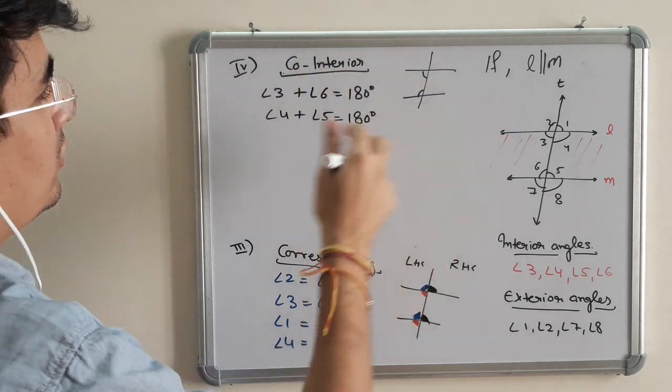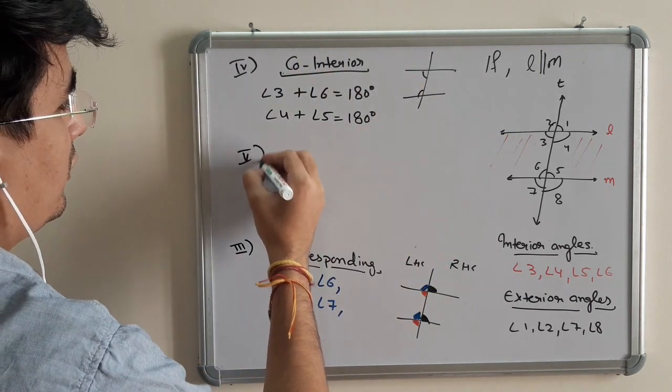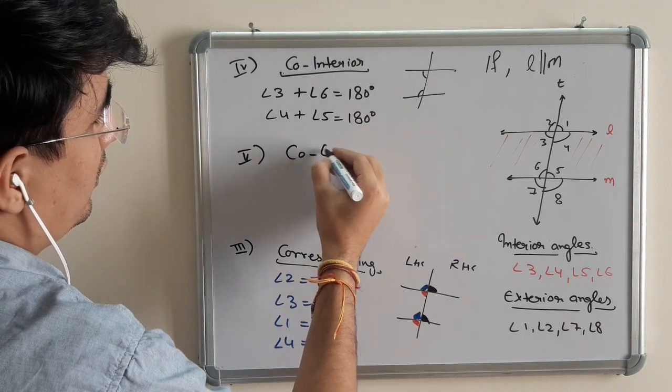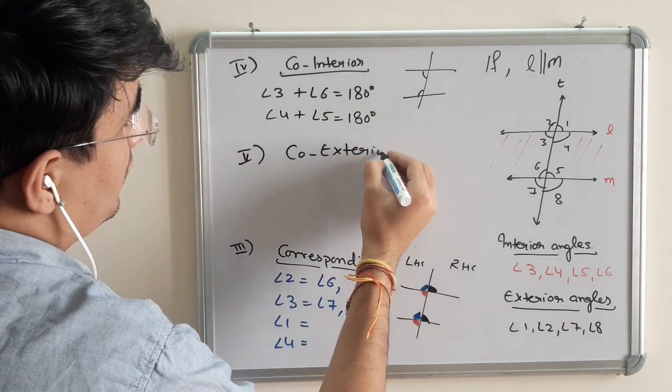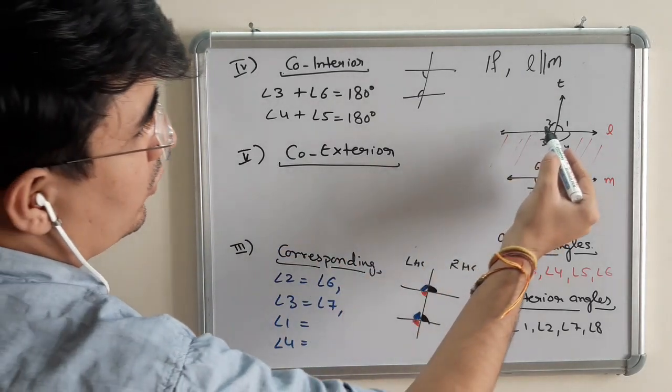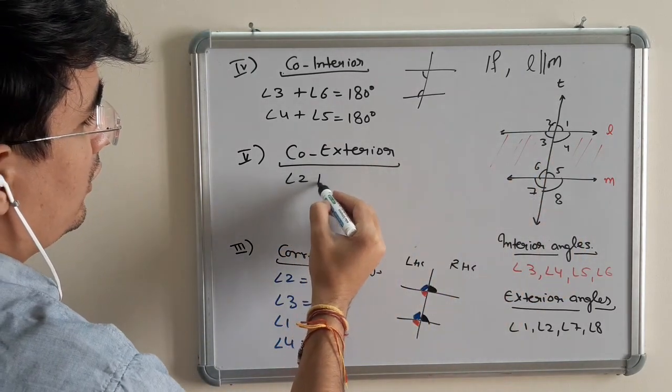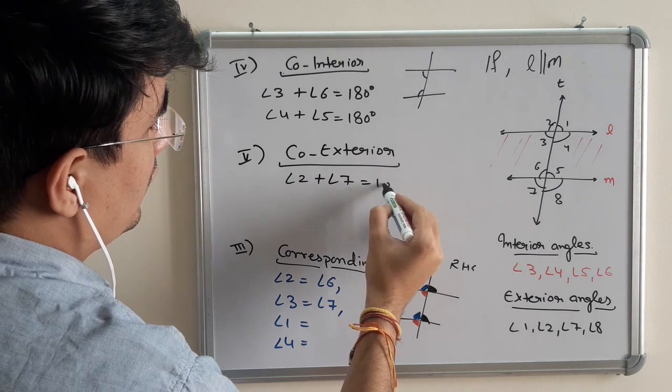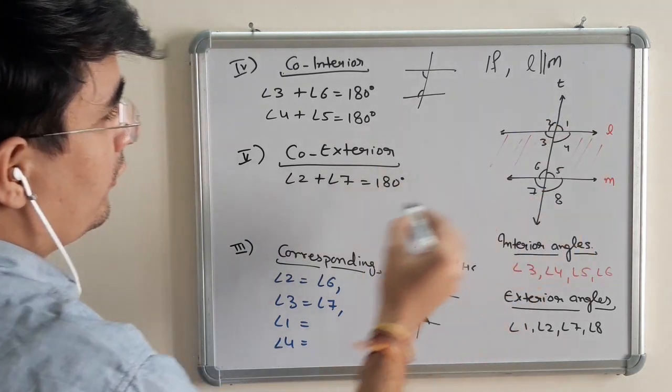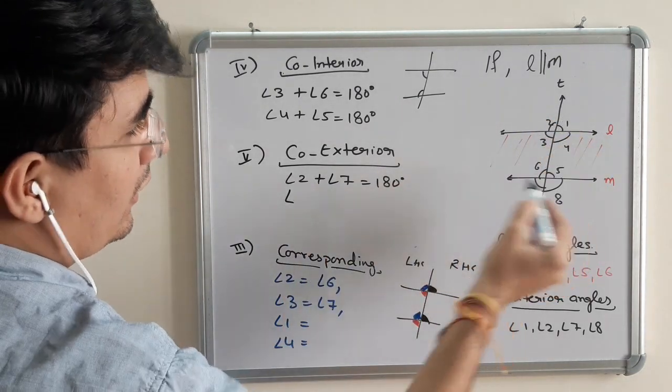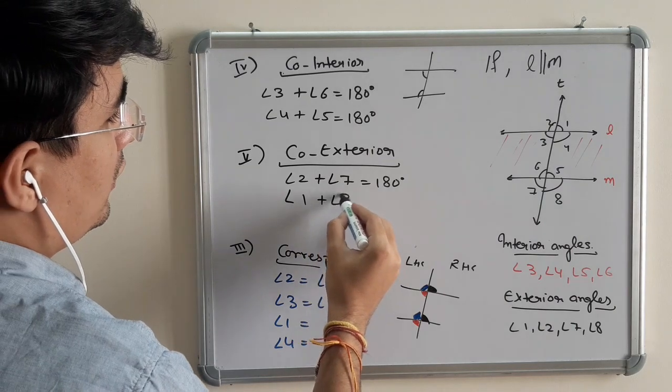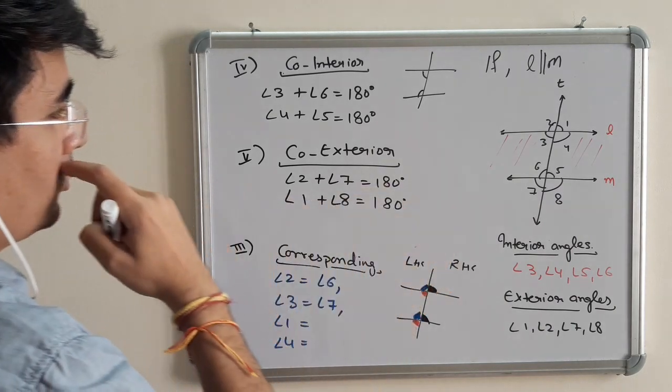Now, similarly, co-interior is also there which is not that famous but we are writing it. Co-exterior. So, co-exterior is 2 and 7. Angle 2 plus angle 7 equals to 180 degree. And 1 and 8 is equal to 180 degree.